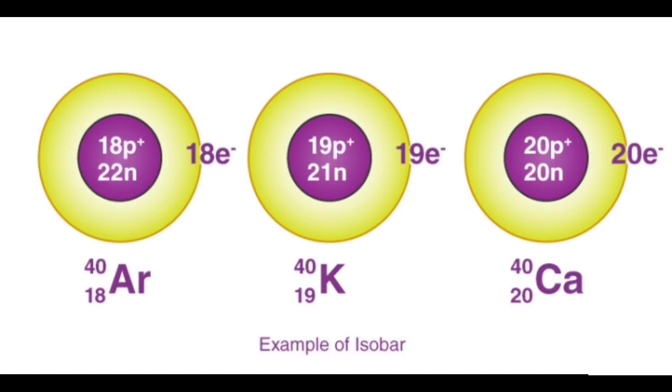Dalton also said different elements have different masses. But later proved that different elements can have same masses. For example, isobars of different elements like argon-40 and calcium-40.